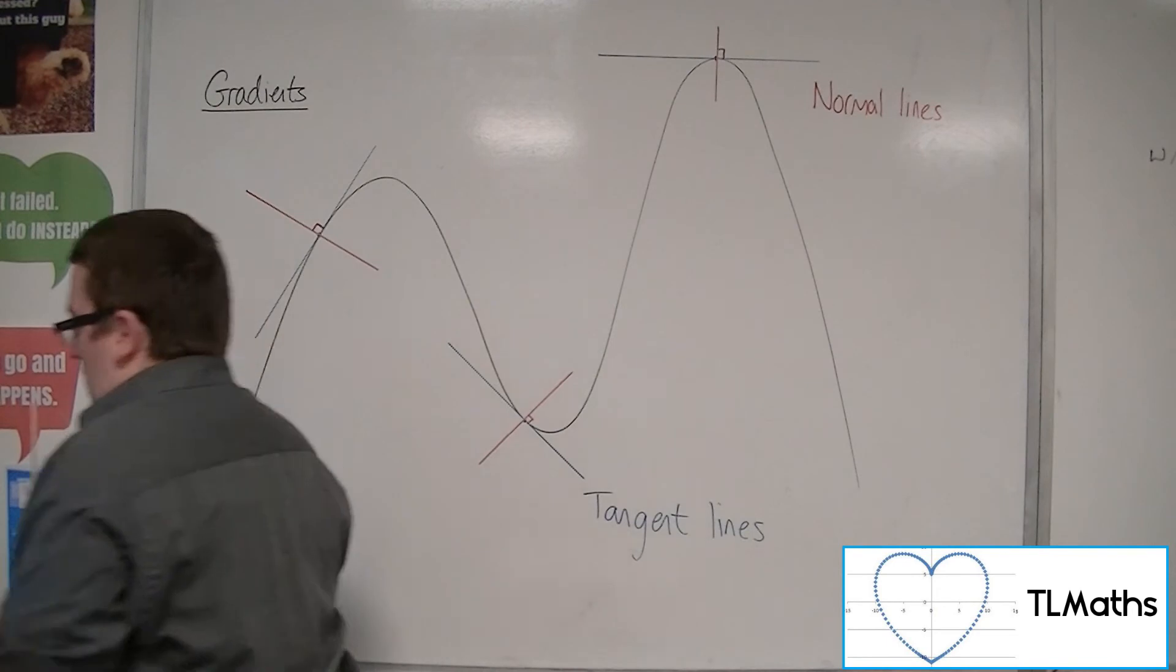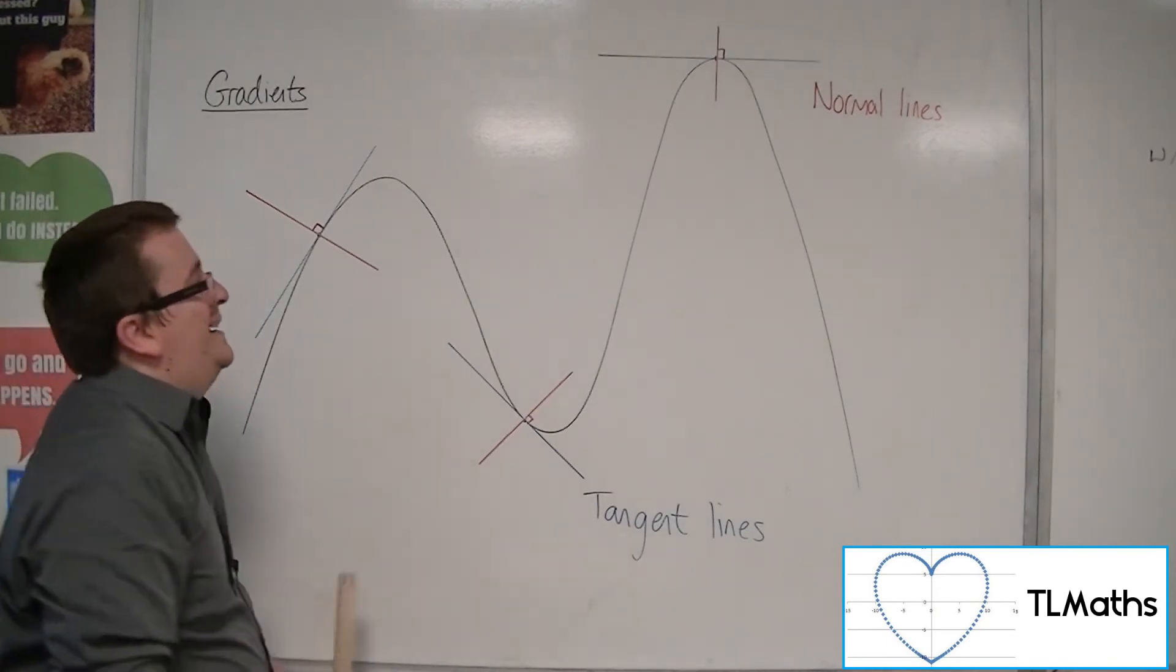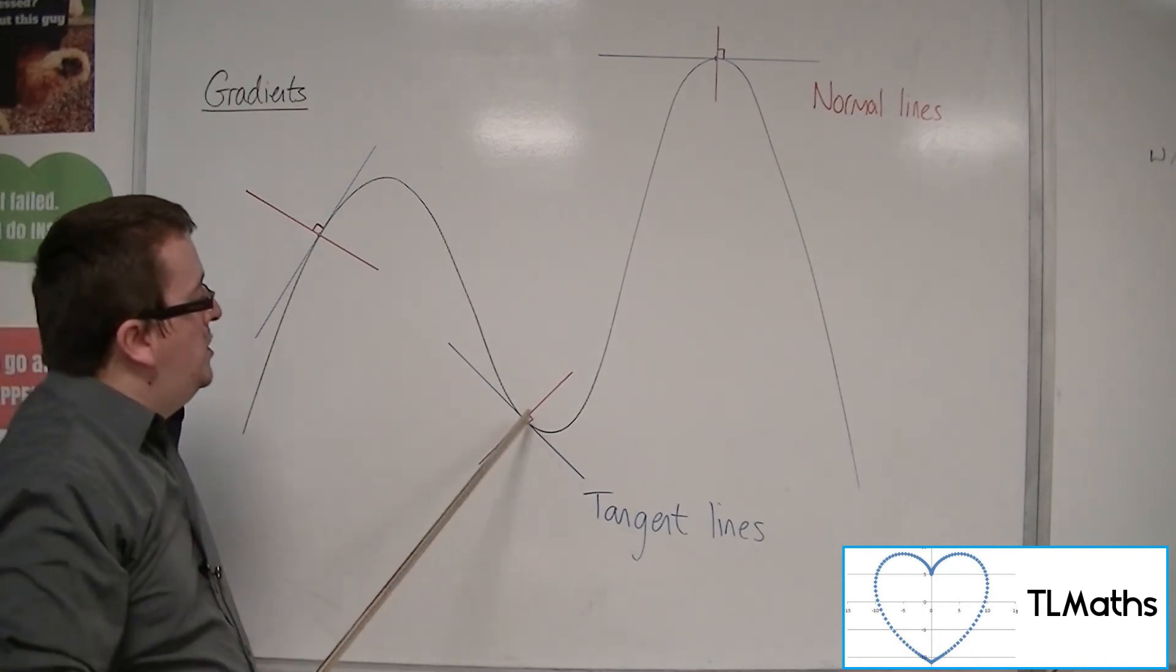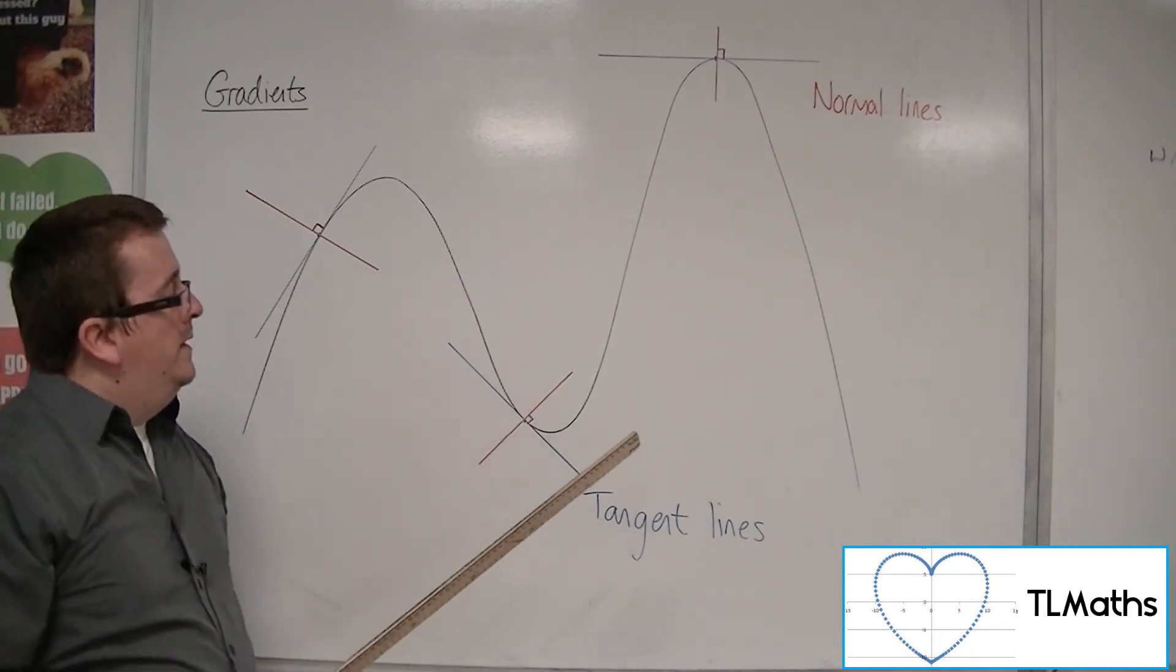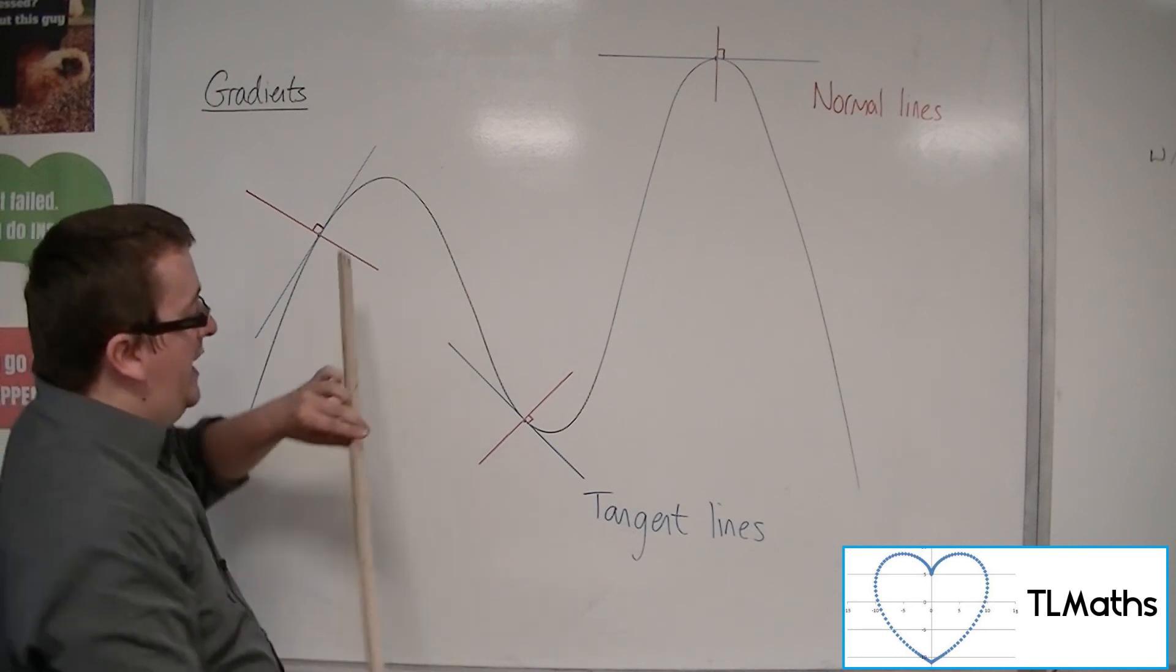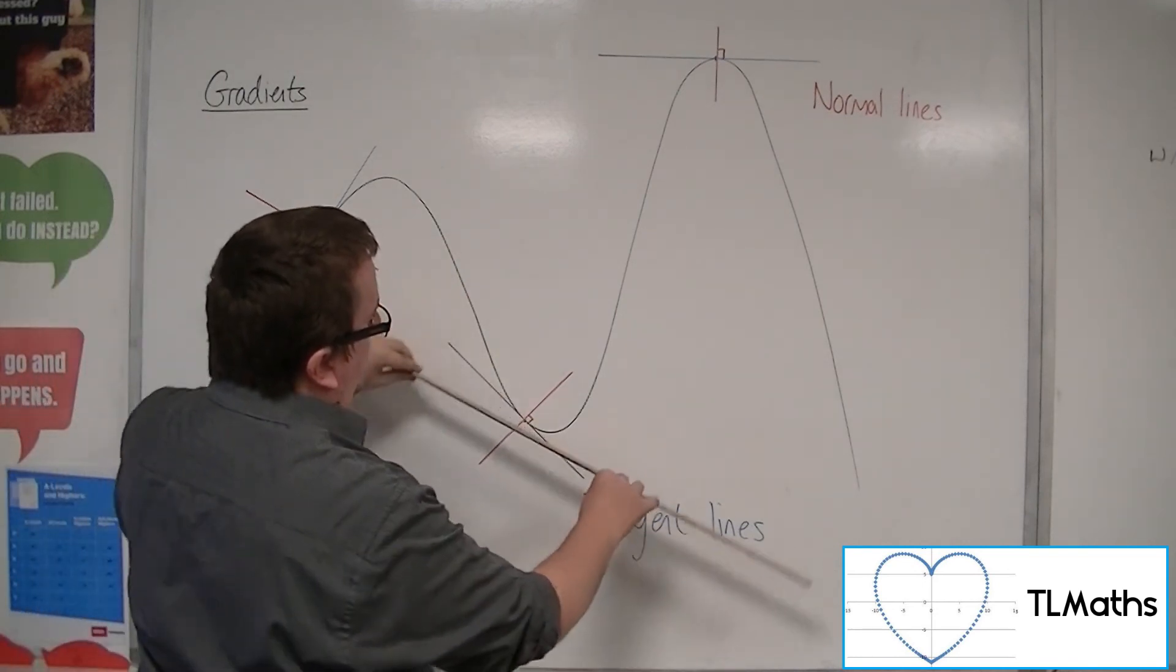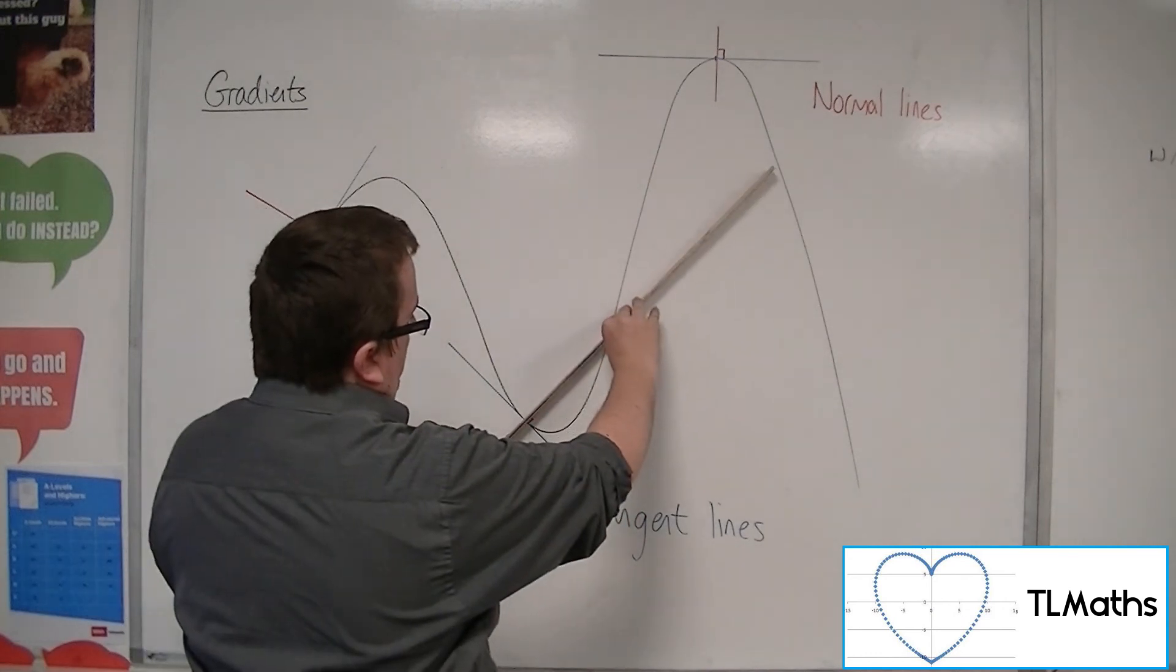So it makes sense then that if we've got the gradient function and we know the point that we want to substitute in, that will tell me the gradient of the tangent. Then I can use the negative reciprocal to find the gradient of the normal.